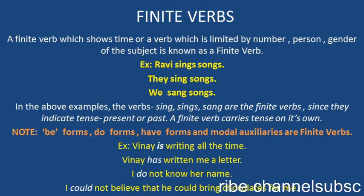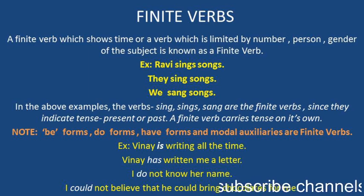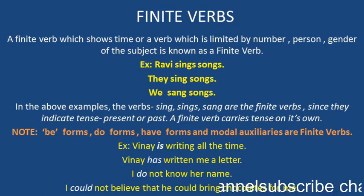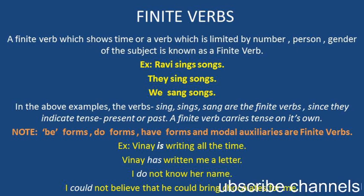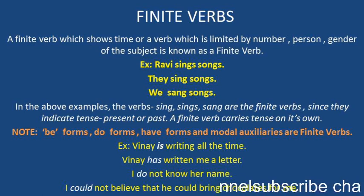Look at the examples. Vinay is writing all the time. Here 'is' is the auxiliary or helping verb. When the tense of the sentence is changed, the helping verb changes. Suppose it is in present continuous — if you change it to past continuous tense, it becomes: Vinay was writing all the time. Only the helping verb changes, so that helping verb is considered as a finite verb. The next main verb is unchanged, therefore it is a non-finite verb.